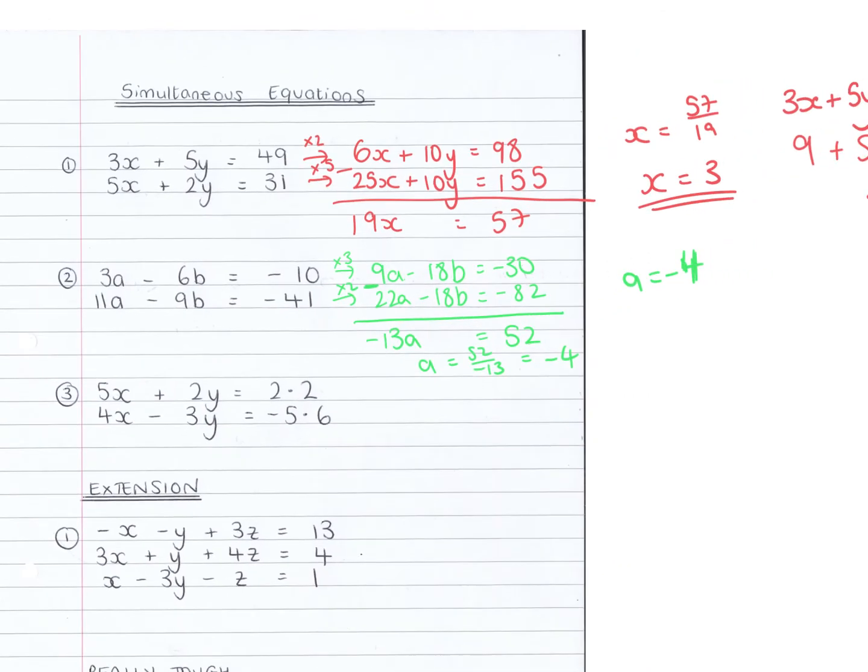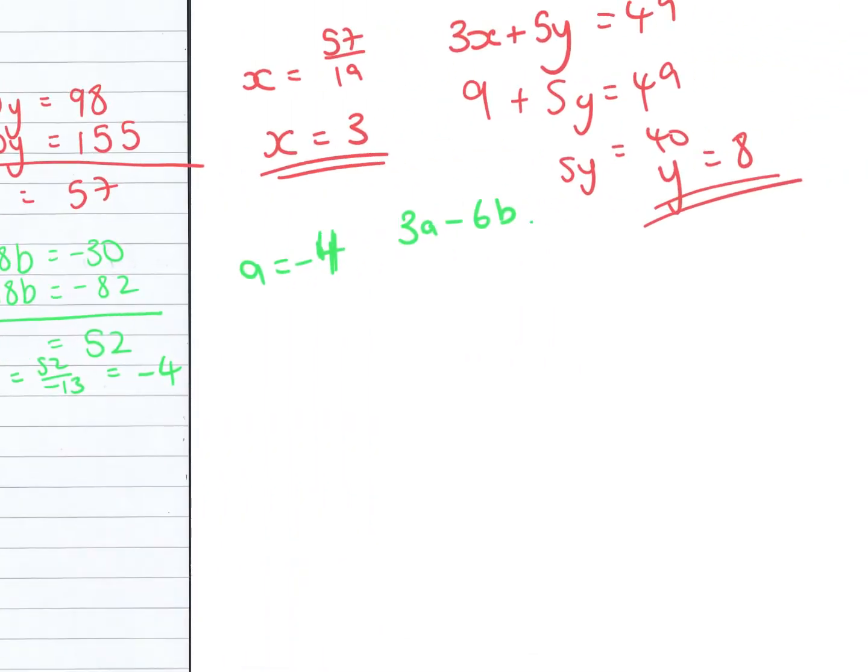And if a equals minus 4, let's substitute that in. If I've got 3a minus 6b equals minus 10, then if a equals minus 4, 3a will be minus 12. Minus 6b equals minus 6b. If I add 10 to both sides, minus 12 plus 10 is minus 2. So minus 6b equals minus 2, b equals minus 1 third.